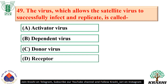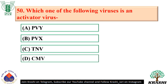Question number 48: The genome of tobacco mosaic virus could be altered artificially by treating it with adenosine diphosphate — option A. Question number 49: The virus which allows the satellite virus to successfully infect and replicate is called the activator virus — option A. Question number 50: Tobacco necrosis virus is an activated virus — option C.